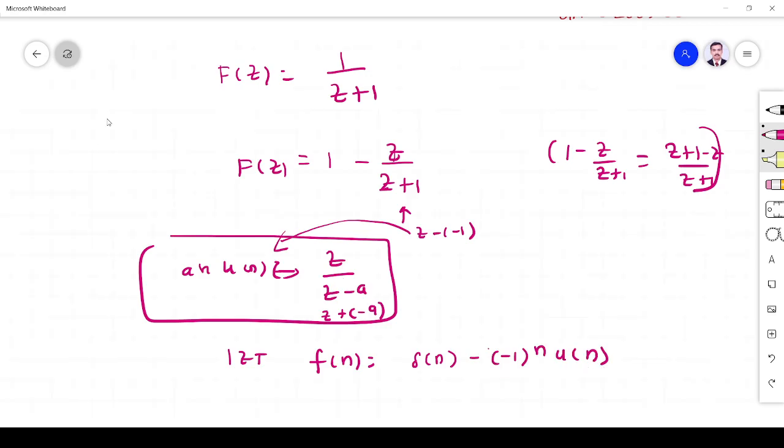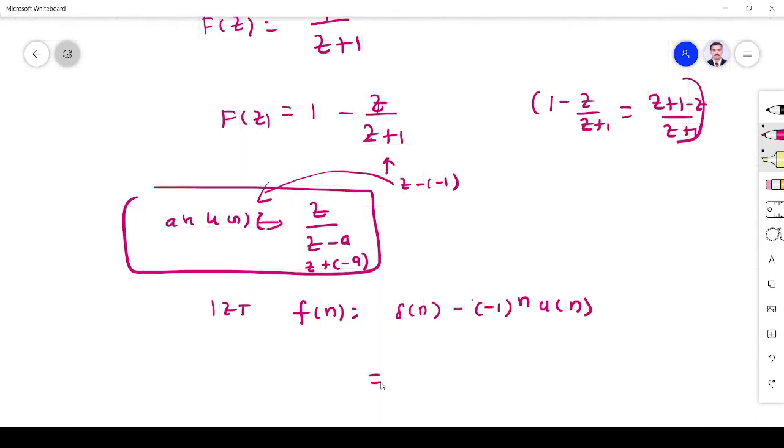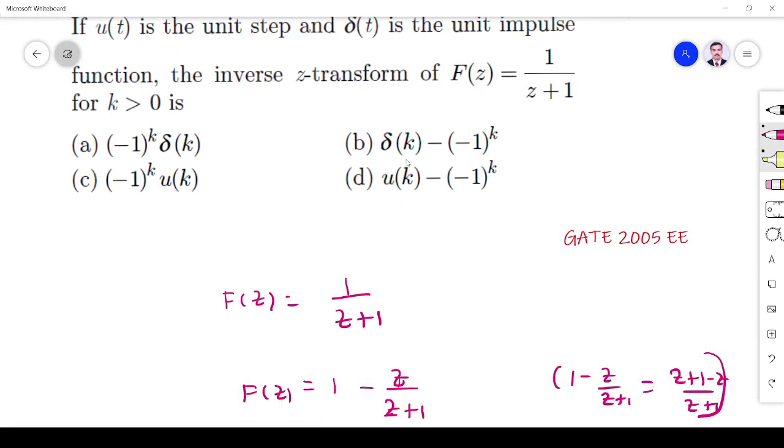So here, they give k. So write everything in terms of k. Then it's (-1)^k. So you can put delta(k) minus (-1)^k u(k). So the answer is option B. Thank you.